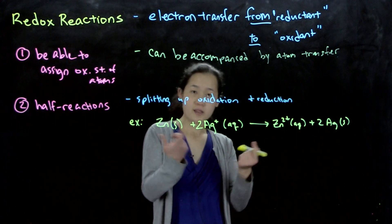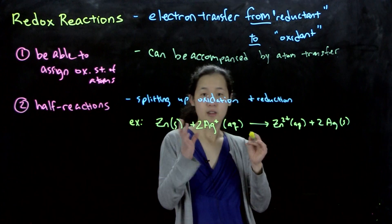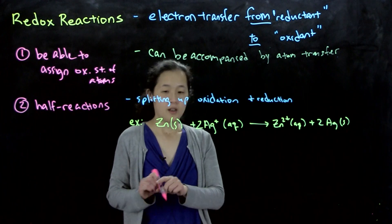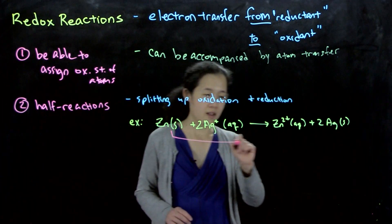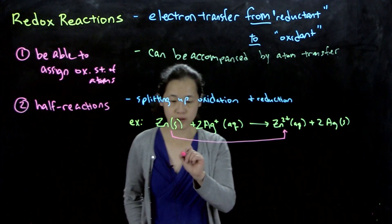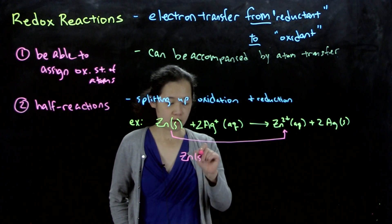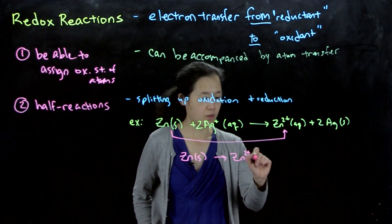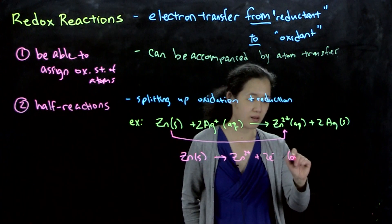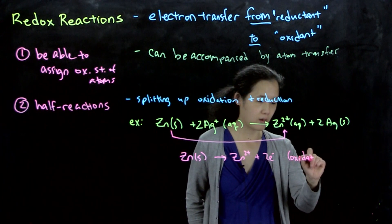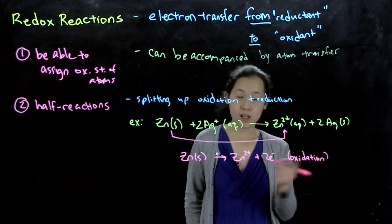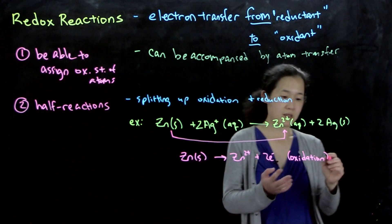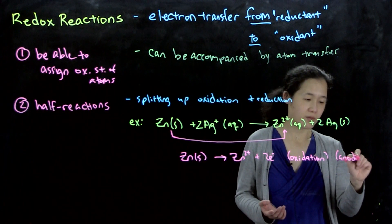But we can break it up into two conceptual half reactions that aren't real. This way it will help us keep track of our electrons. So we'll break it up into, let's say, zinc 0 going to zinc 2 plus plus two electrons. This is an oxidation. So zinc 0 is going to zinc 2 plus, so it's losing electrons. This would also be called an anodic reaction.